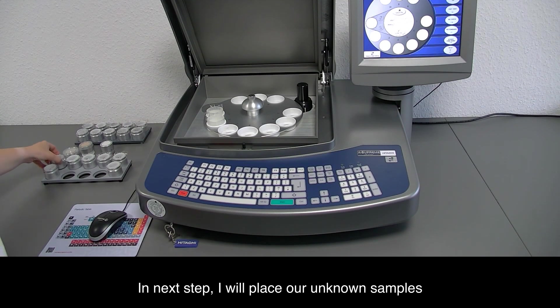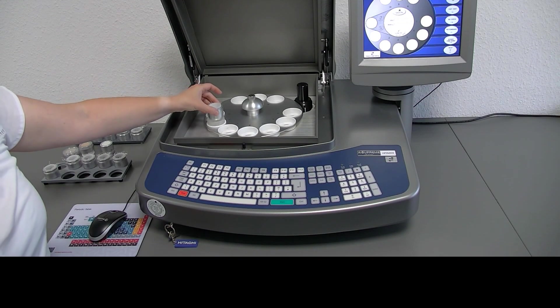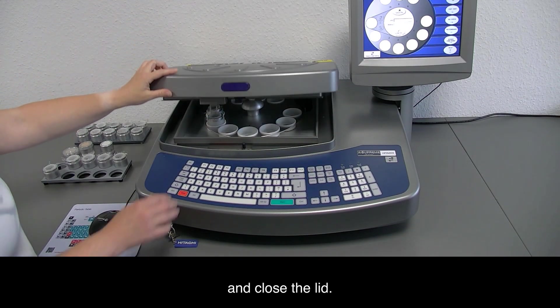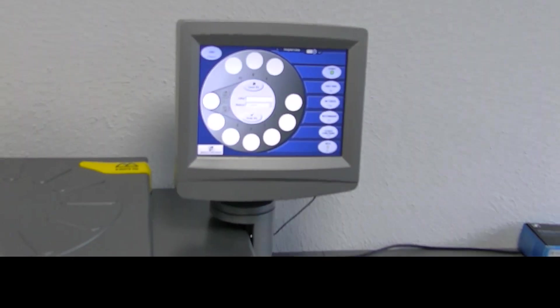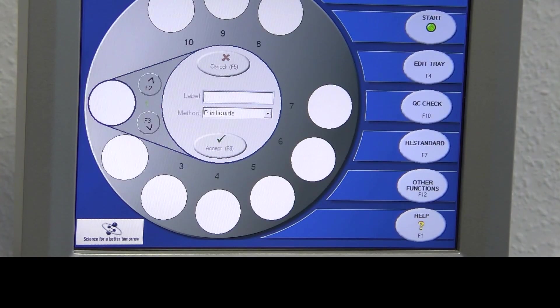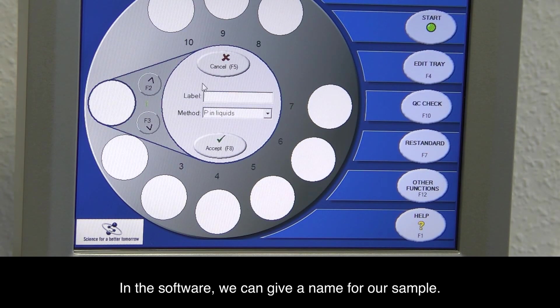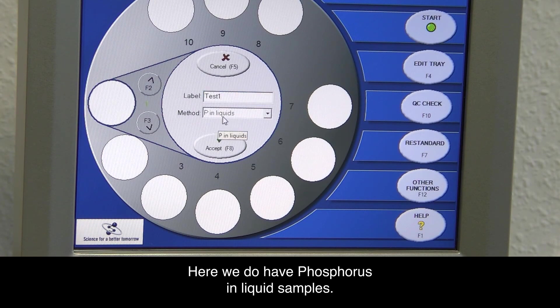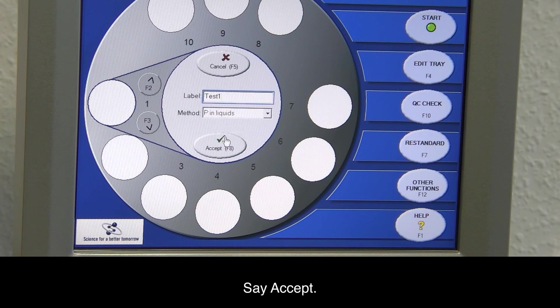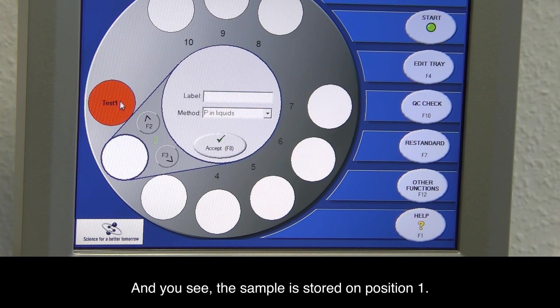In the next step, I will place our unknown samples and close the lid. In the software, we can give a name for our sample, let's say test one, and choose a method. Here we have phosphorus in liquid samples, so we choose this method. Say accept and you see the sample is stored on position one.